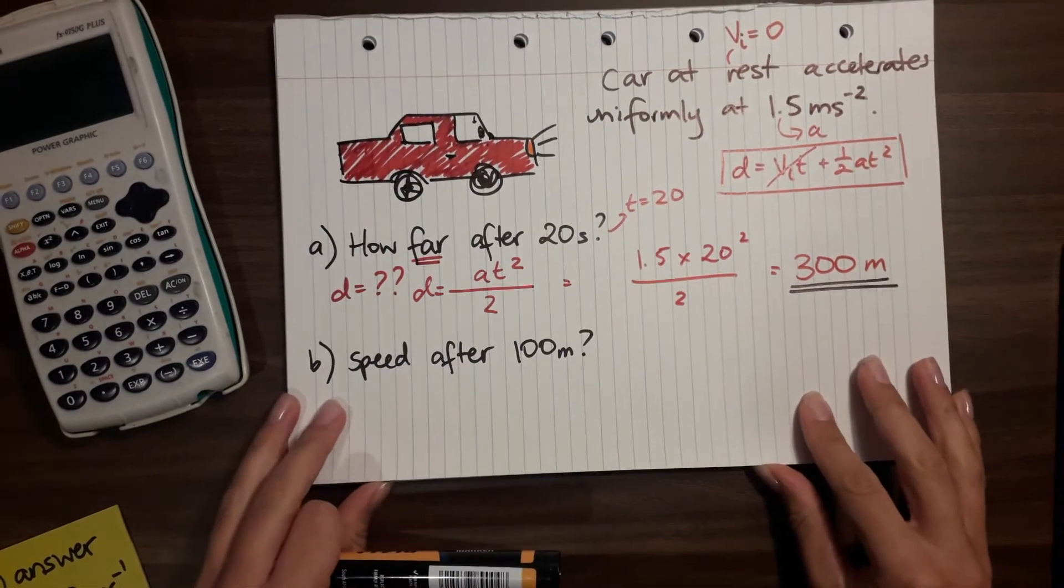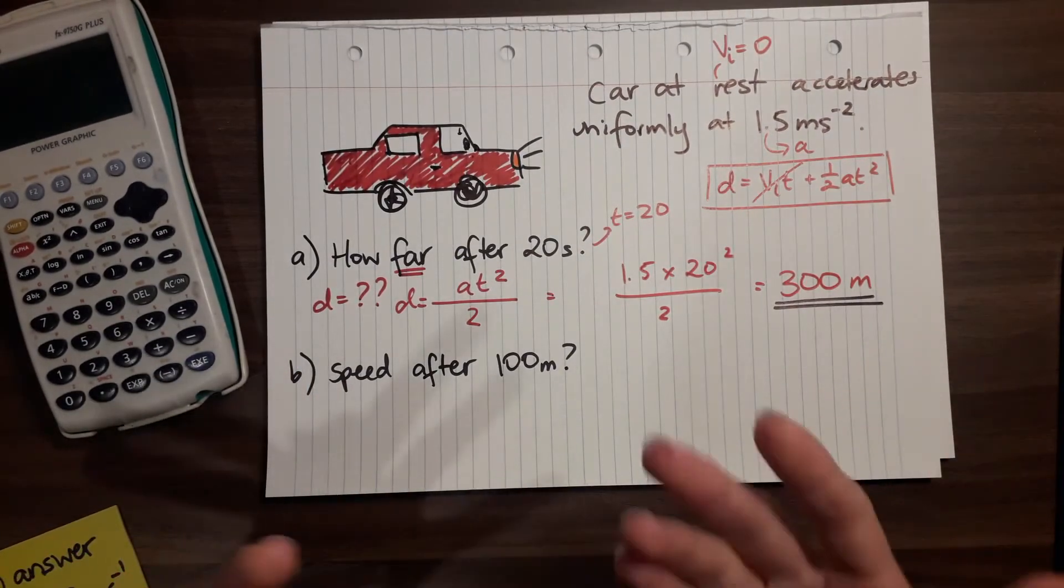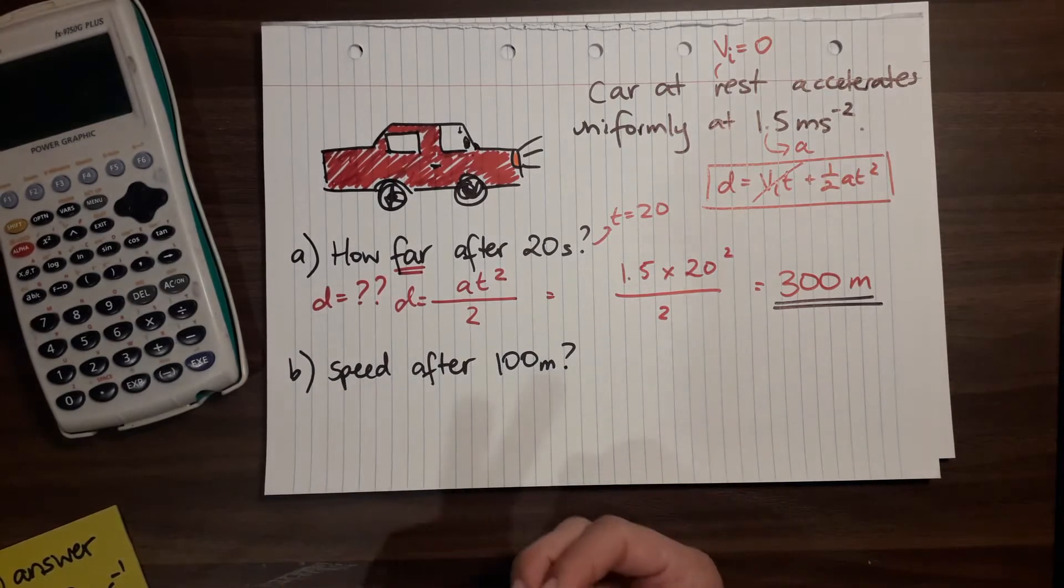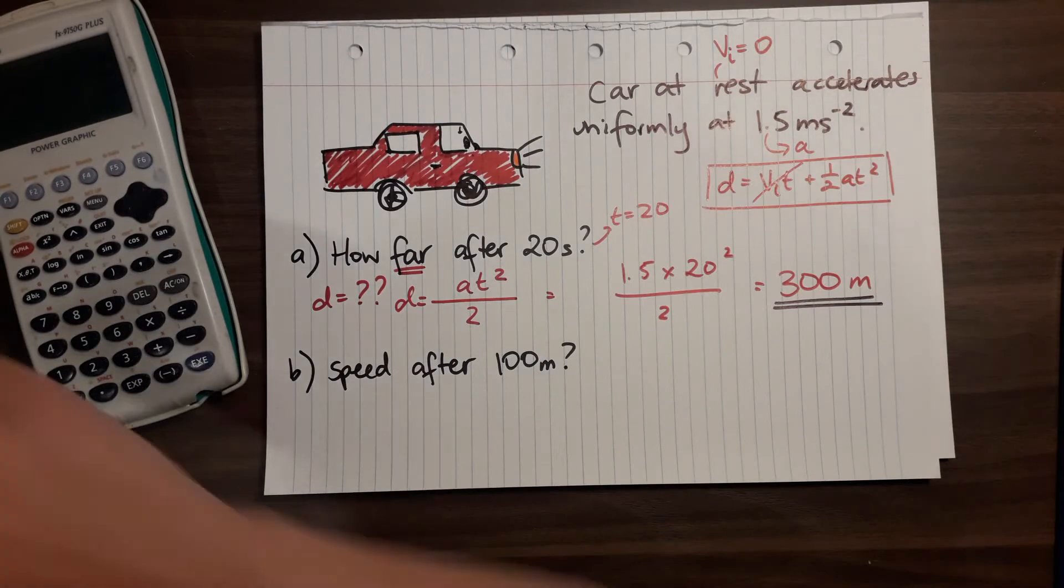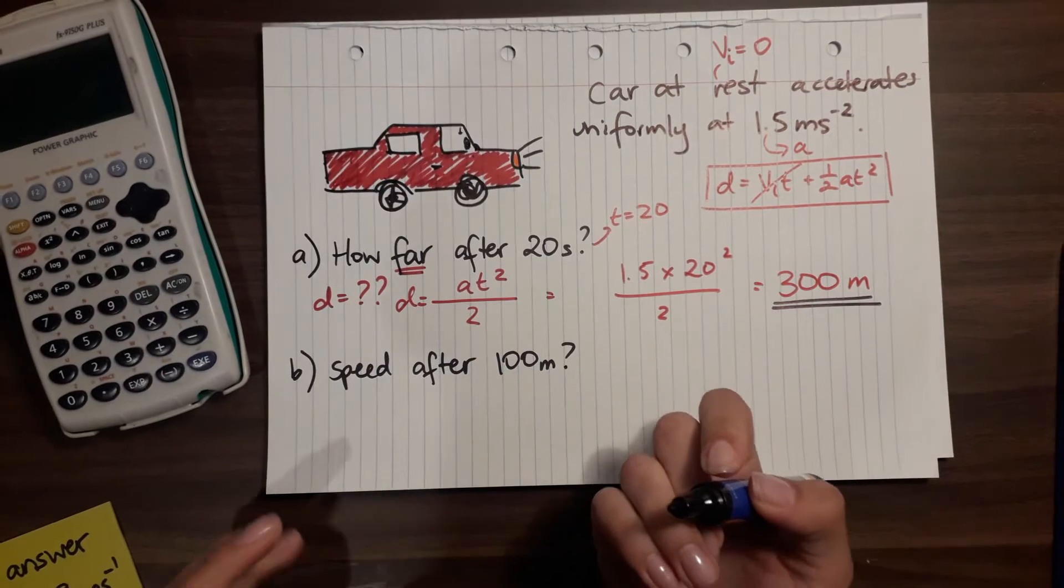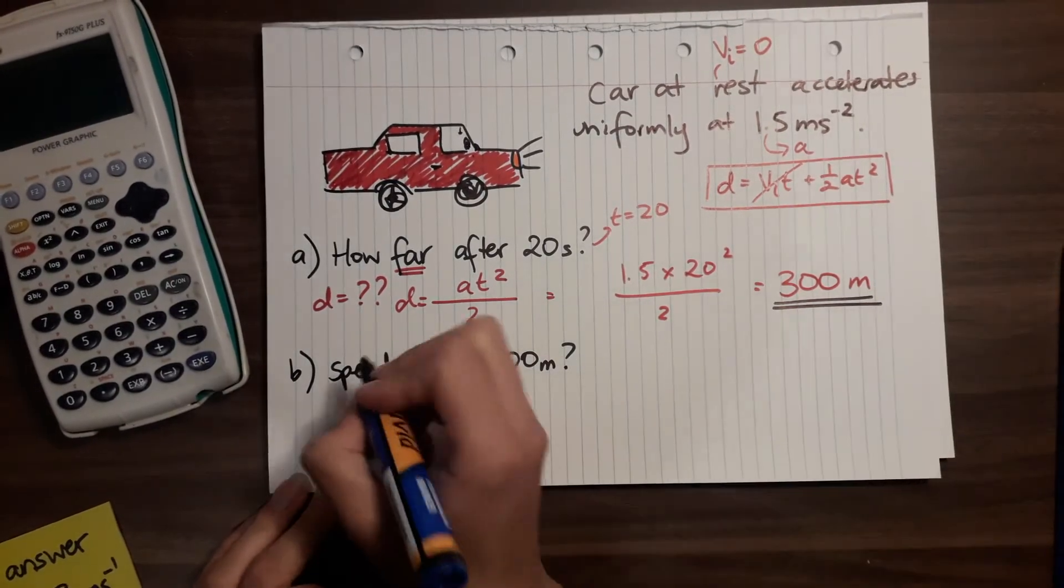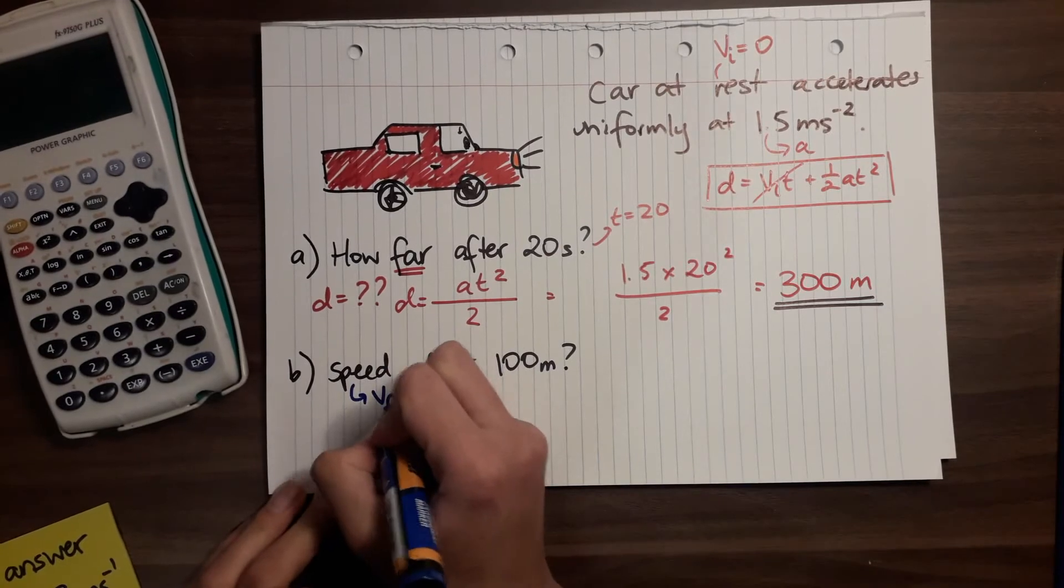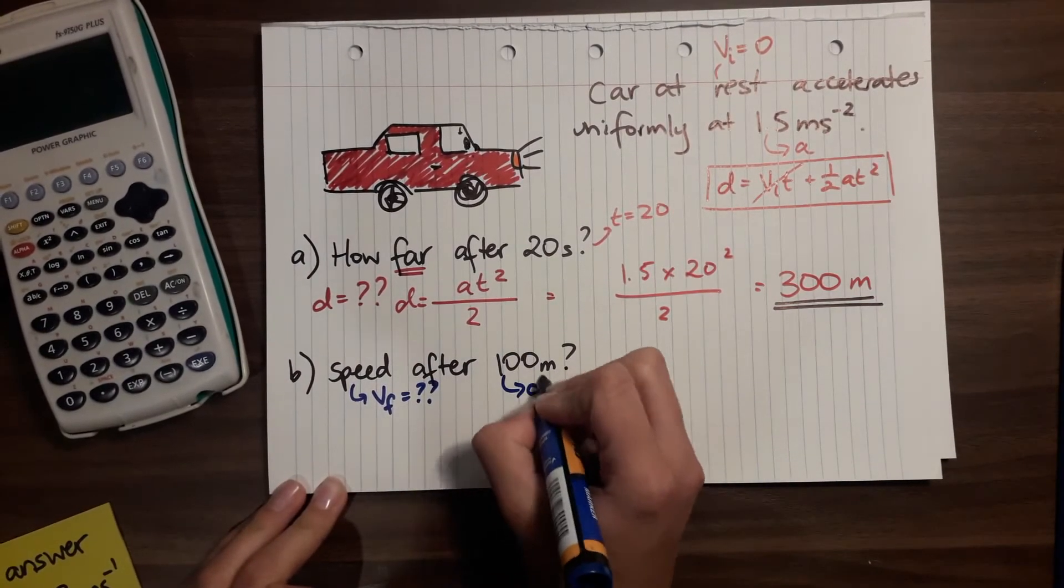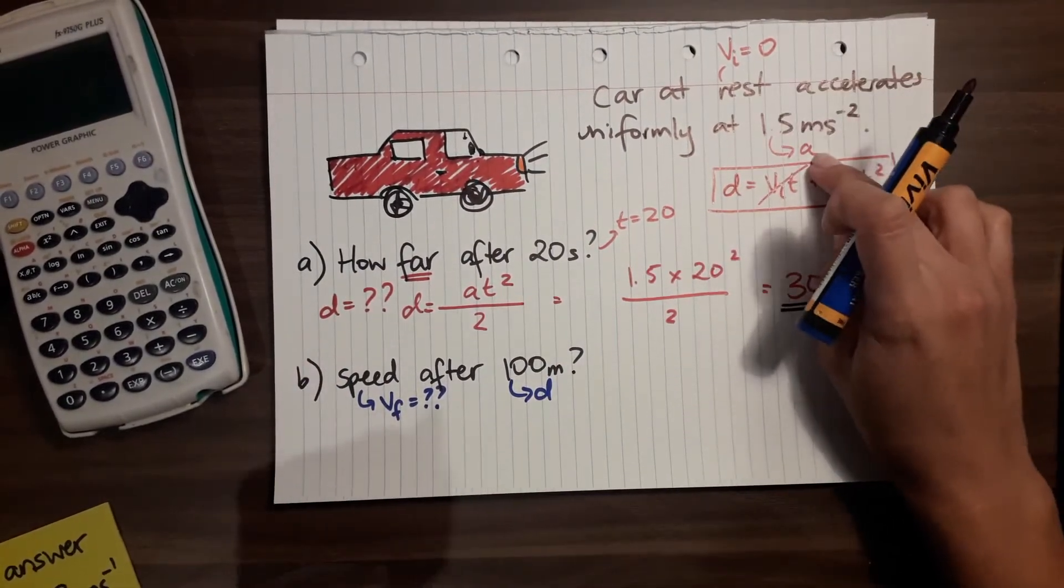Another question is: with this car and everything we know about this car, what would its speed be after 100 meters? So I might do this one in blue. Speed is the question, and it would be after a certain amount of time, so it would be its final speed. 100 meters is a distance, and remember we already knew the initial velocity and the acceleration.